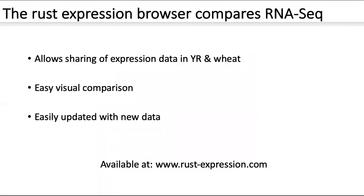To summarise, this browser allows for easy sharing of expression data from both the yellow rust pathogen and the wheat host. It also allows for visual comparison across a large number of isolates without needing any specialist bioinformatic knowledge, and no more hardware than a device that can access the internet. We're going to be maintaining this and can add data at any point — whether that's something someone provides us (we just need reads and a bit of metadata), new data we generate ourselves, or data we pick up from the literature. We really hope this can be a big improvement in opening up this field.